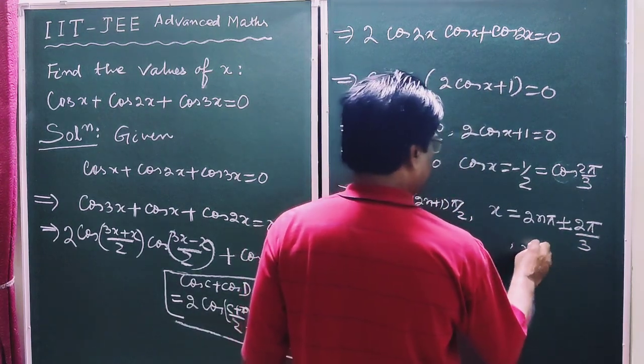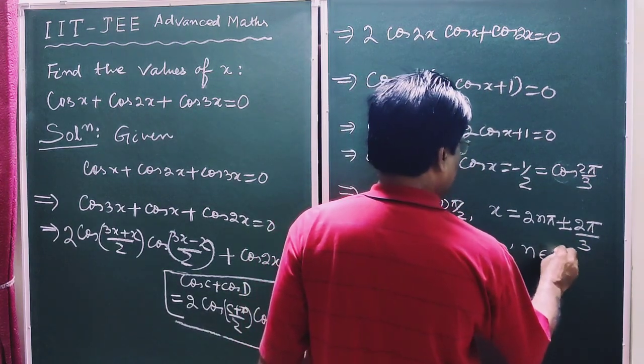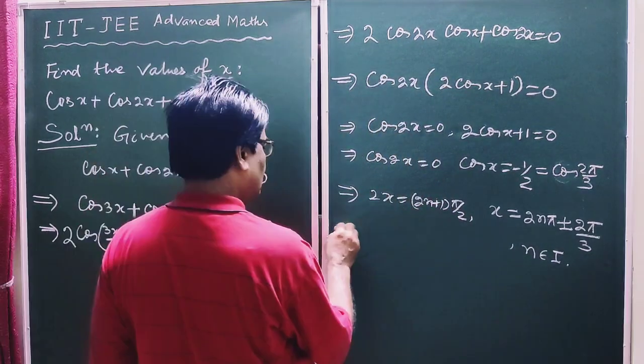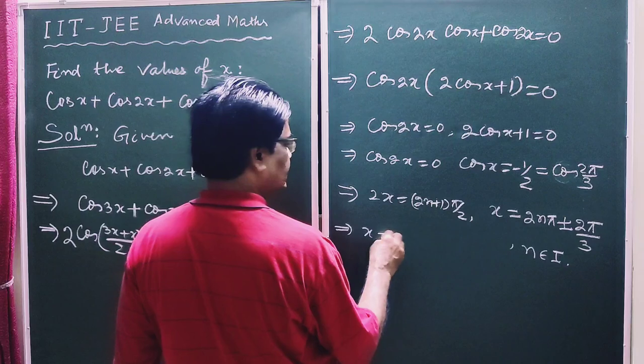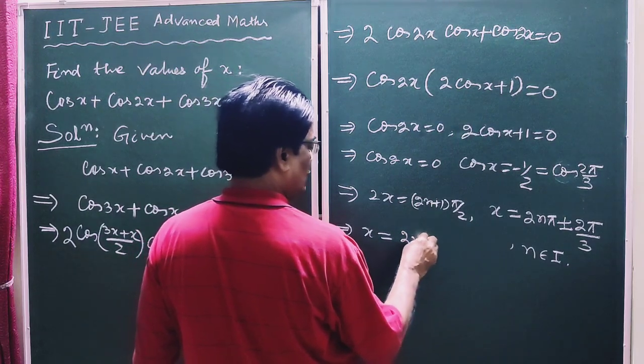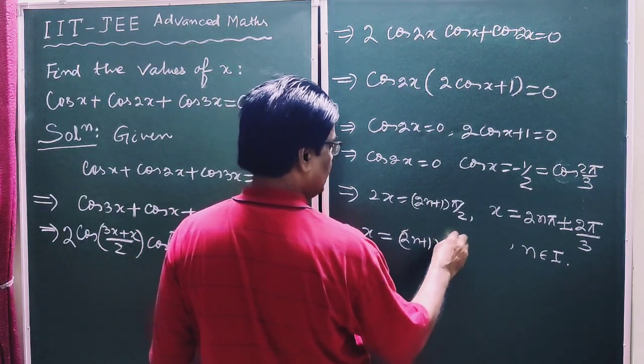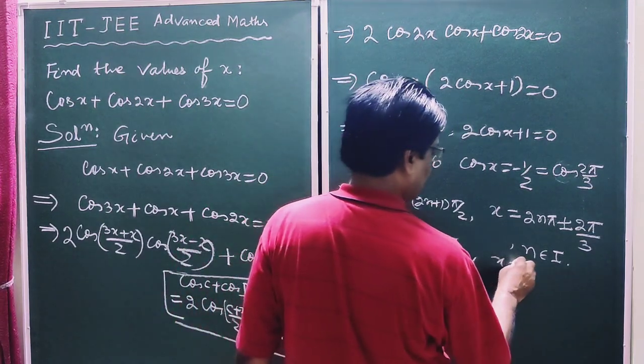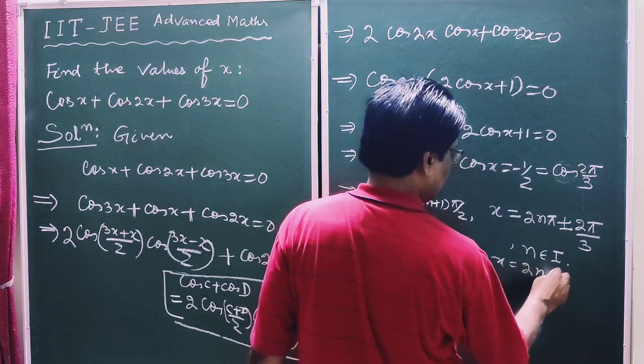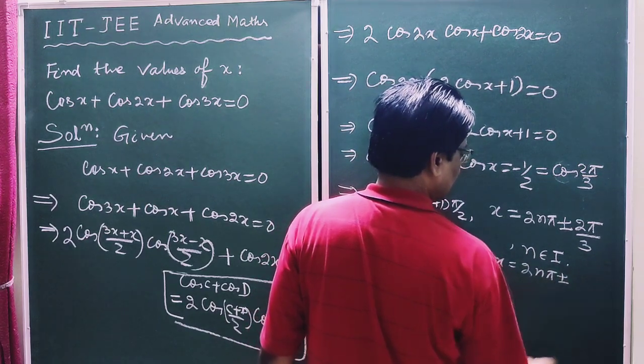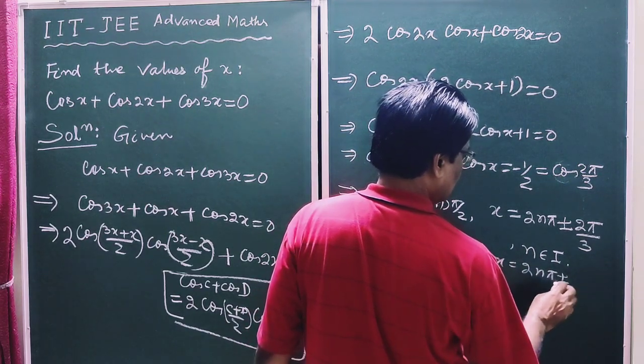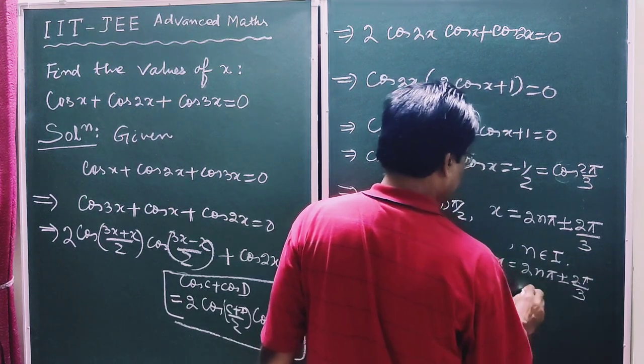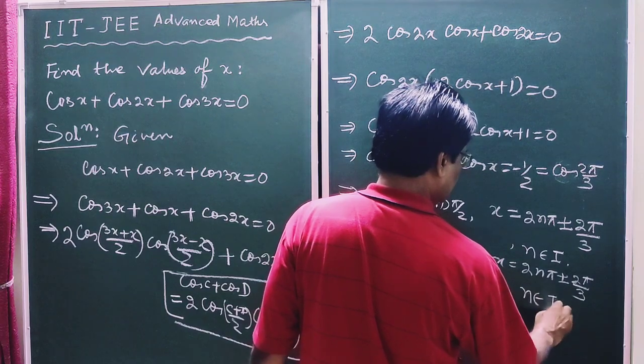This implies x equals 2n plus 1 pi by 4, where n belongs to the set of integers, and x equals 2n pi plus minus 2 pi by 3, where n belongs to the set of integers.